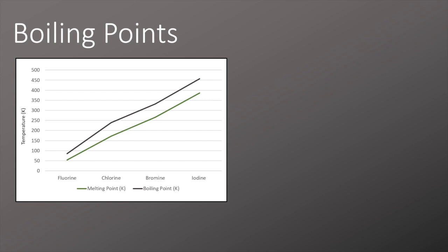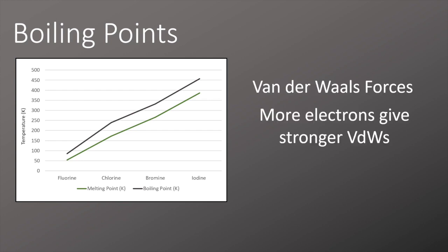As we go down the group the boiling point for halogens increases. This is because the boiling point depends on the strength of the van der Waals forces between the molecules. The more electrons an atom or molecule has, the stronger the van der Waals, so bigger molecules like I2 have more electrons, and therefore stronger van der Waals forces requiring more energy to overcome these forces and to boil them.